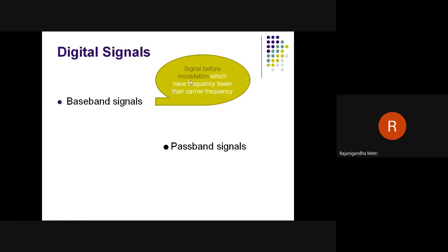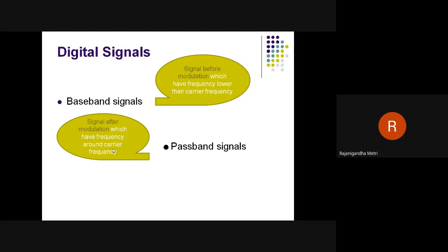A baseband signal is the signal before modulation, which contains your actual and original information. This signal has a frequency which is lower than the carrier frequency. The second type is the passband signal — the signal after modulation — and it has a frequency around equal to the carrier frequency, because you are modulating your baseband signal with a carrier frequency.